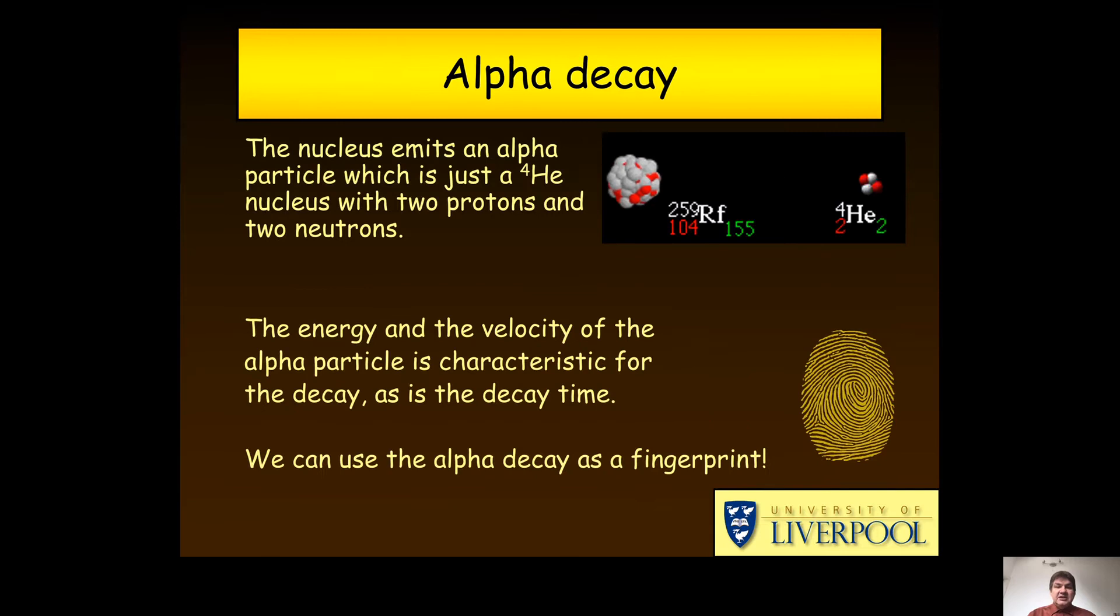In alpha decay, you emit two protons and two neutrons at the same time in the form of a helium-4 nucleus. This lowers the mass by four and the atomic charge by two. What is interesting is that the energy of the emitted alpha particle is highly characteristic of the decaying isotope. The same is true for the half-life.